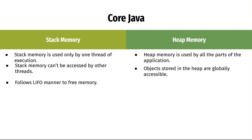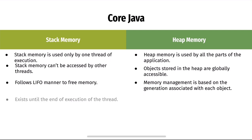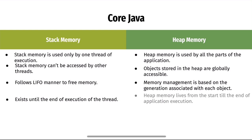For memory management, stack memory frees up memory using LIFO — last in, first out — whereas heap memory management is based on the generation associated with the object. Stack memory exists until the end of the execution of the thread, whereas heap memory lives from the start to the end of the application execution.